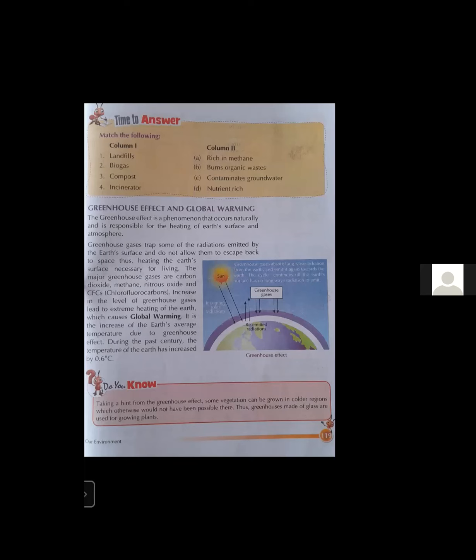Simply put, during the daytime the Earth becomes hot, and during the night time it gives heat radiations back to the atmosphere. In the atmosphere, some gases absorb the heat and send it back to Earth's surface, causing the temperature to rise again. Greenhouse gases trap some of the radiation emitted by Earth's surface and do not allow them to escape into space, thus heating the Earth's surface — which is necessary for living beings.